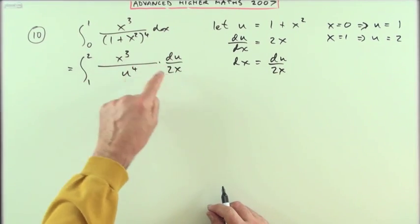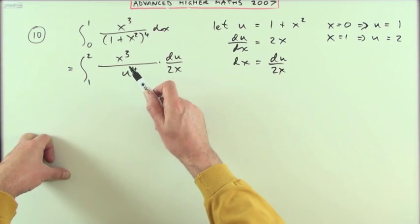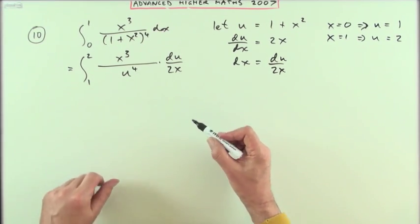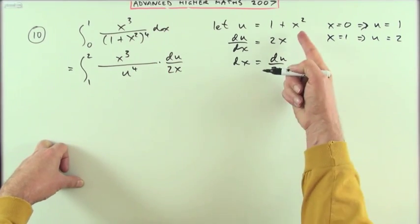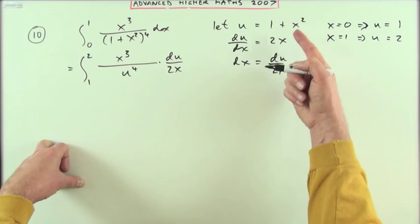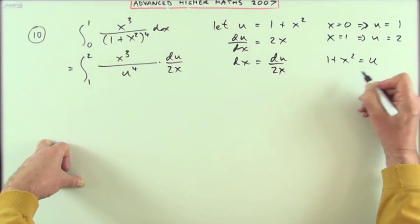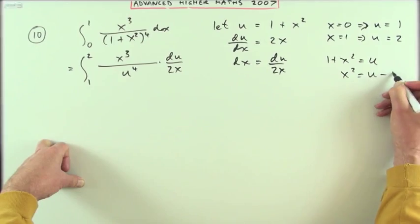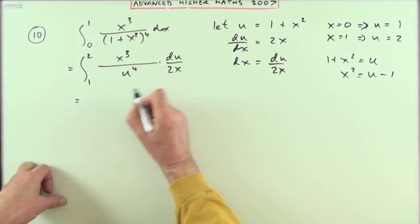So I've still got some x's lying about like reluctant tenants - they'll need to get removed. Well that would knock out one of those, leave me with an x squared, and I've got a relationship here that I can use. If 1 plus x squared is u, then x squared will be u minus 1, so I could use that here. And I'll take that 2 out while I'm at it.